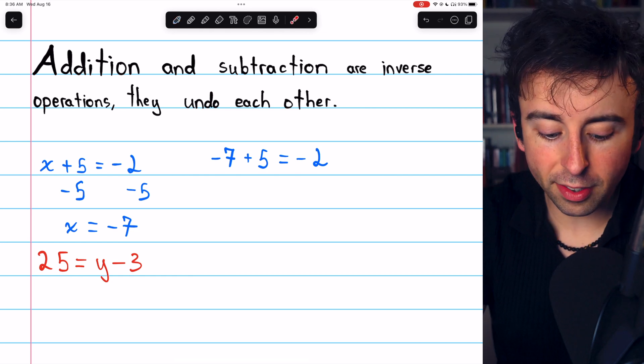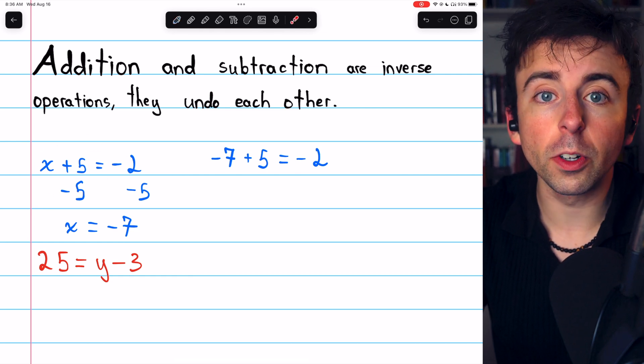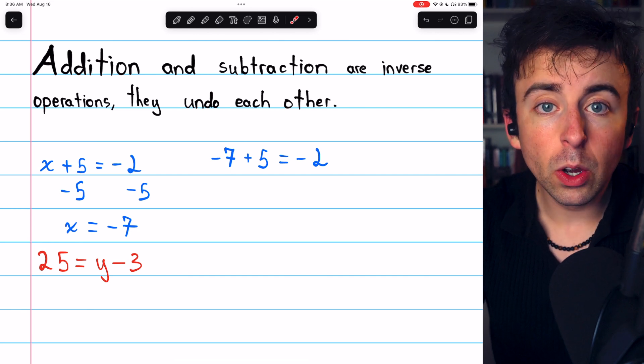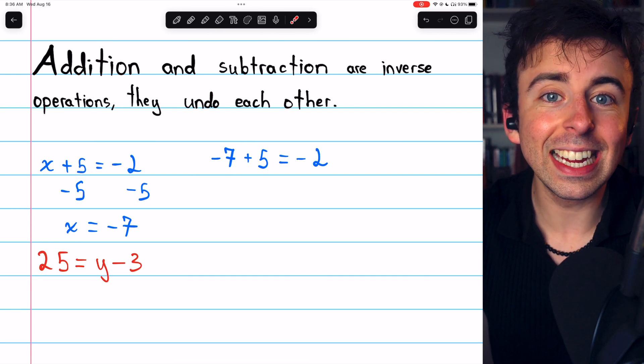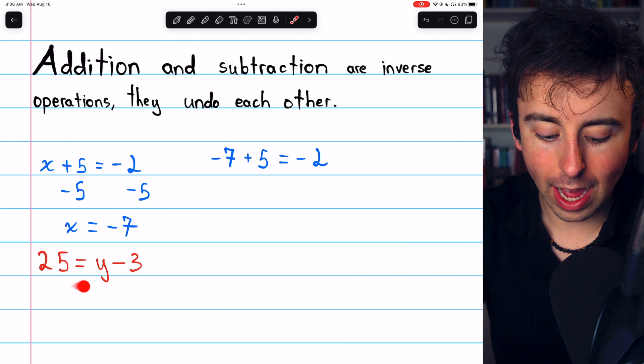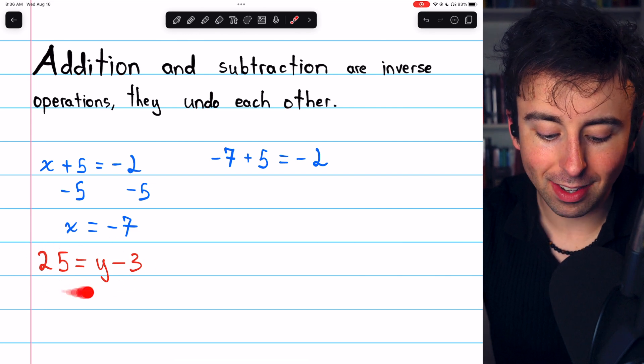In this case, we solve the equation using subtraction in order to undo the addition. We can do a very similar thing in the next problem, 25 equals y minus 3.